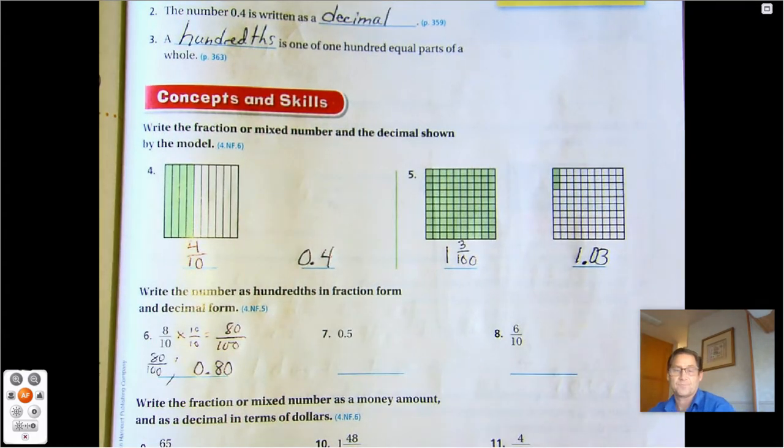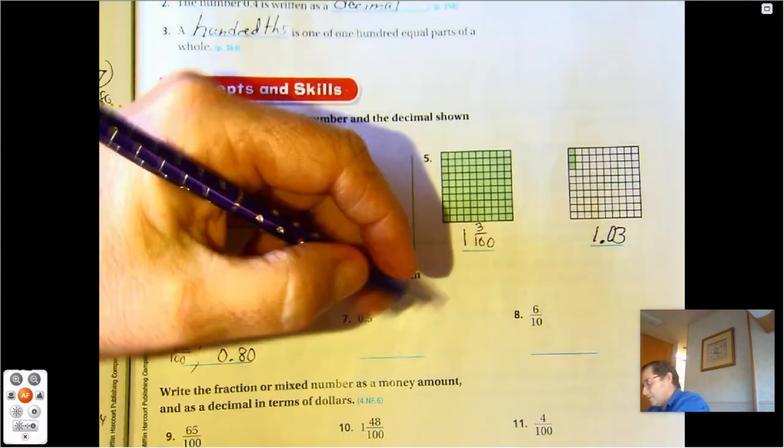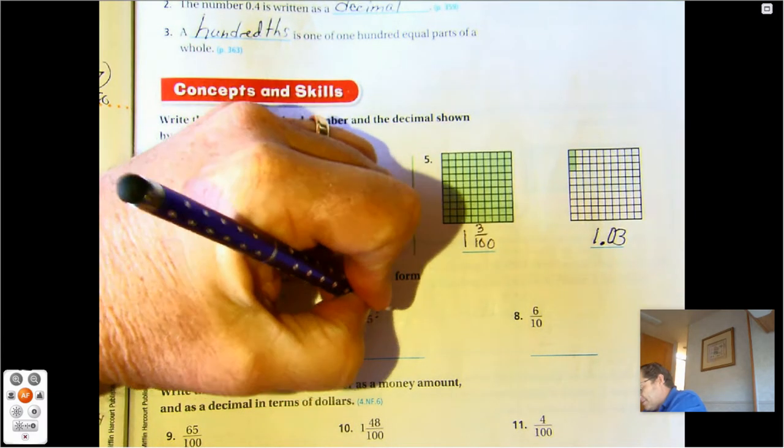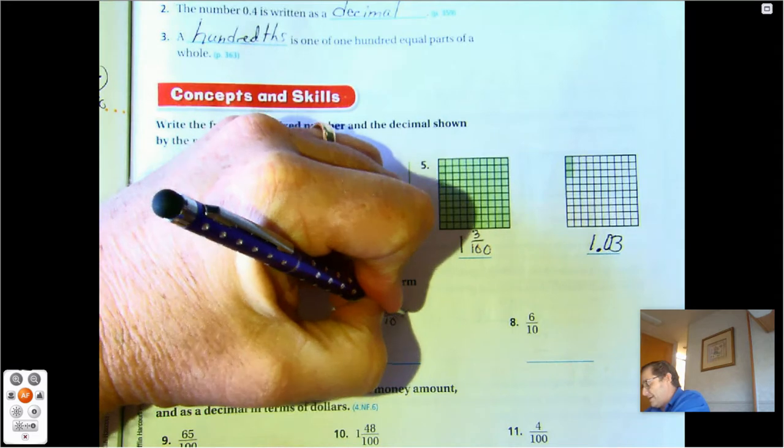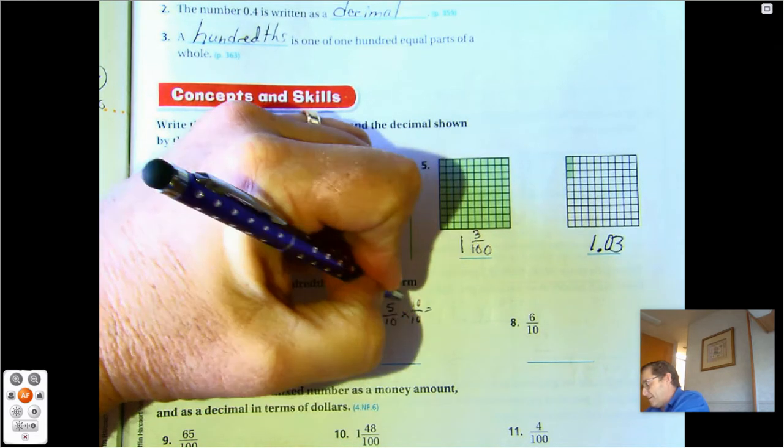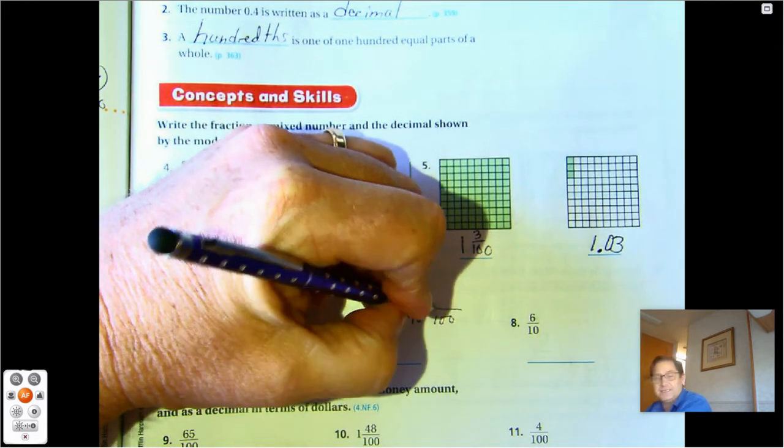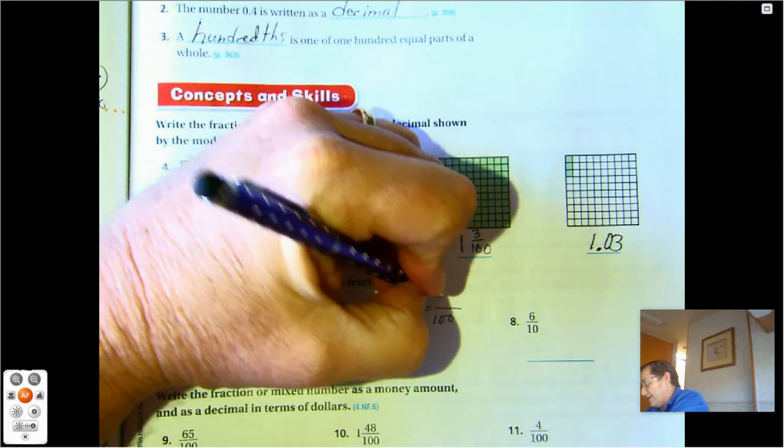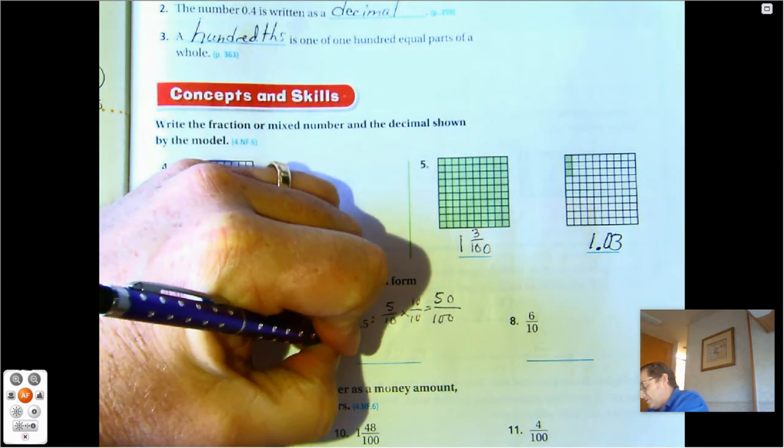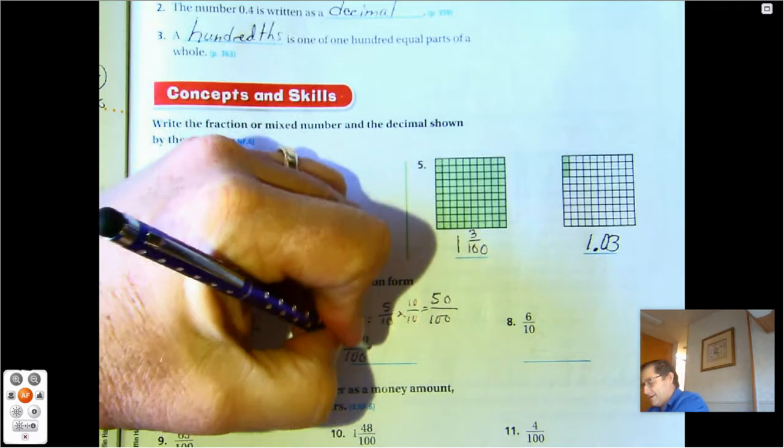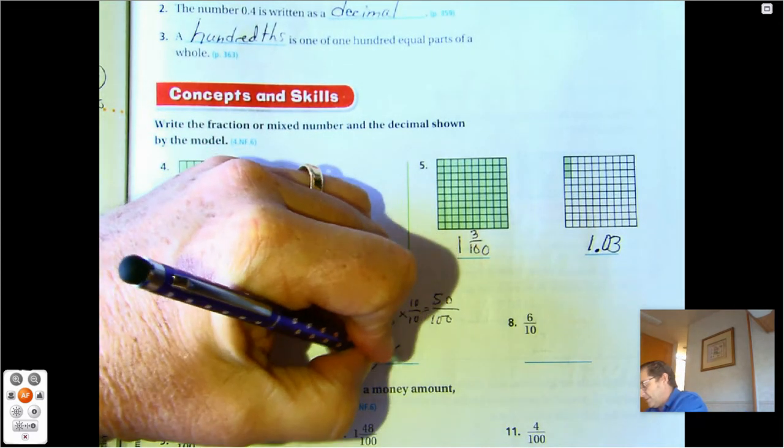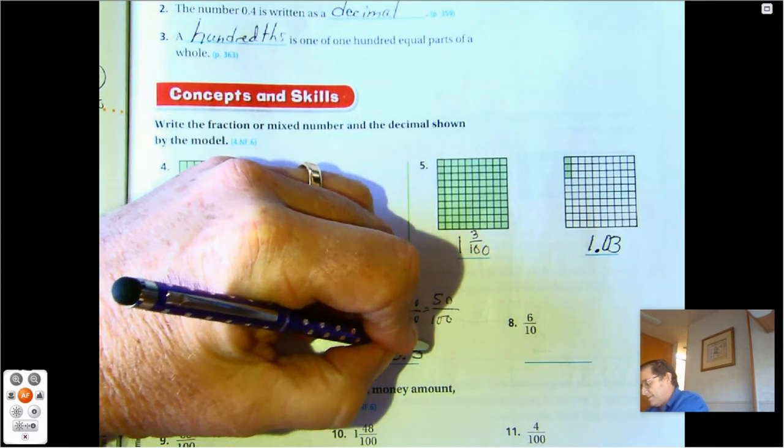Number seven, so right now this is five tenths, we multiply that by ten again. Ten times ten is a hundred and five times ten is fifty. So as a fraction in hundredths, it's fifty hundredths and the decimal is 0.50.